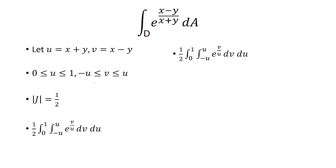So now we need to evaluate this. Find the antiderivative of e to the v over u with respect to v. Plug in negative u to u to get e squared minus 1 over e times u. And then integrate this.